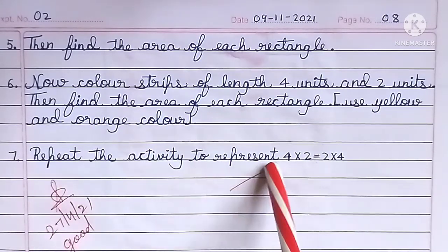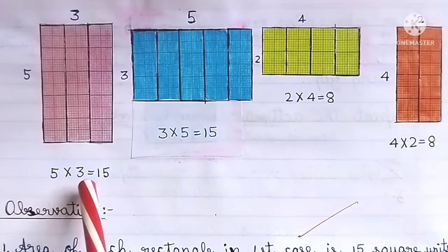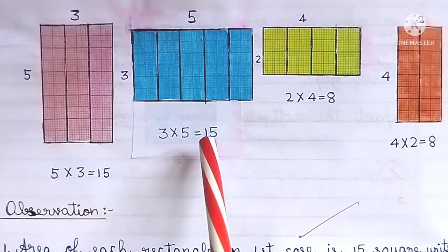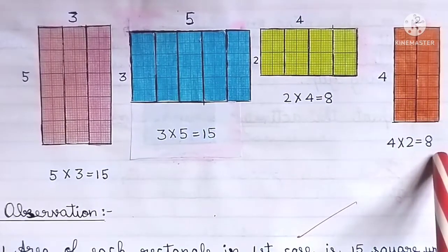Repeat the activity to represent 4 × 2 = 2 × 4. Calculate: 5 × 3 = 15, 3 × 5 = 15, 2 × 4 = 8, 4 × 2 = 8.